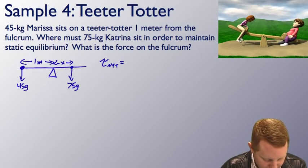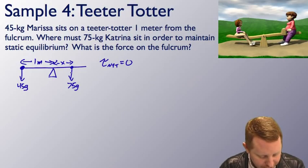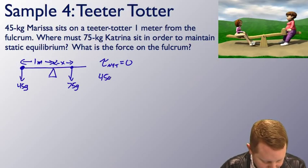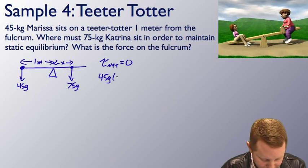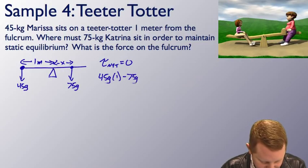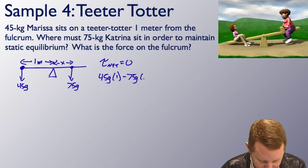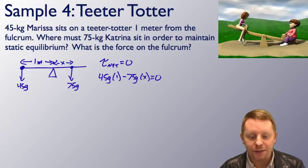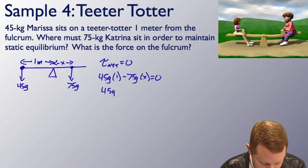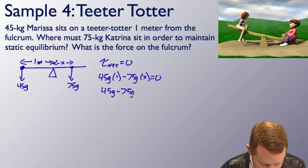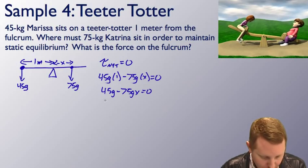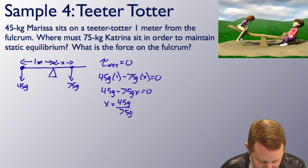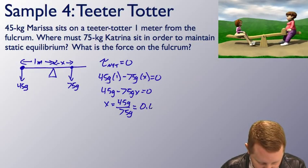If we are in static equilibrium, the net torque must be zero. So net torque equals zero. But the net torque, we're going to have 45 g operating at a lever arm of 1 meter minus 75 g operating at some lever arm x equal to zero. So now let's just solve this for x. That means that 45 g minus 75 g x equals zero. Or x is going to be equal to 45 g over 75 g, which is just 0.6 meters.